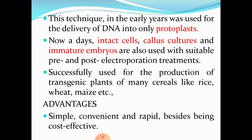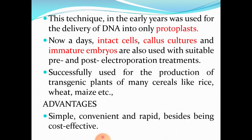In earlier years, this technique was used for delivery of DNA into only protoplasts. But nowadays, people have exploited this technique to put DNA into intact cells, callus cultures, and immature embryos as well. When involving intact cells, callus cultures, and immature embryos, suitable pre-electroporation and post-electroporation treatments are needed for the transfer to be successful. It has been successfully employed for producing transgenic plants of many cereals like rice, wheat, and maize.